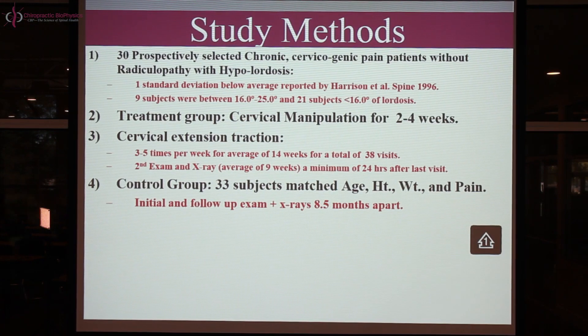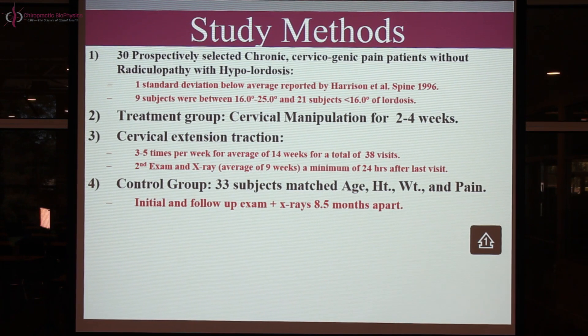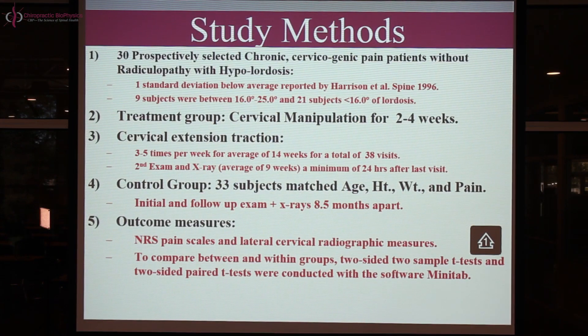We compared this to a cohort of self-selected control subjects — 33 subjects with chronic neck pain and loss of the cervical lordosis who opted to be in the control group. These subjects had an initial examination and then 8.5 months later a second examination; they received no care and self-selected in a non-randomized fashion into the control group. Outcome measures included cervical curve segmental and total angles on x-ray, as well as a numerical rating score for chronic neck pain.